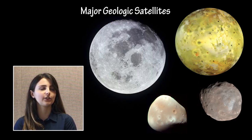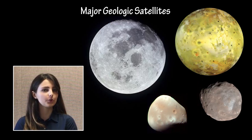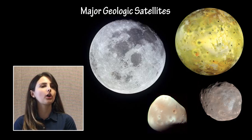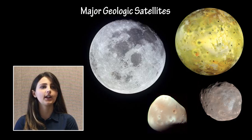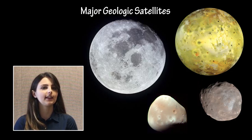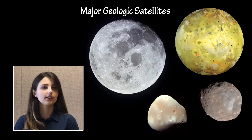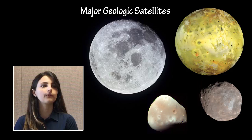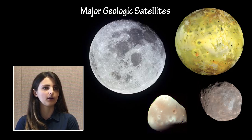The major satellites included in the 2018 solar system event are large, rocky satellites with dynamic and very different surface geologies, as well as fascinating histories of formation and evolution. The satellites included are Earth's moon, Mars's moons Phobos and Deimos, and Jupiter's moon Io.